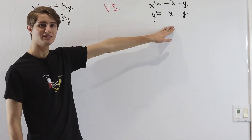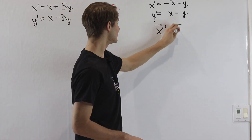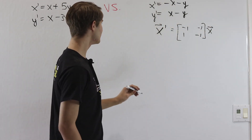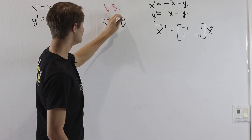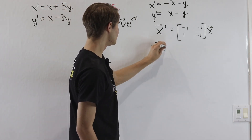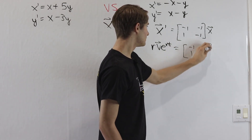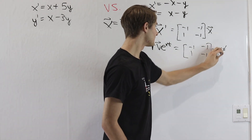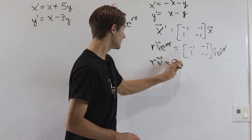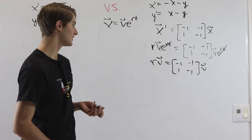Now let's look at the second differential equation. We go through the same process. Our vector equation is x prime equals the matrix negative 1, negative 1, 1, negative 1 times x. We guess x equals v times e to the rt, so differentiating the left side gives rve to the rt equals the matrix times ve to the rt. Canceling e to the rt on both sides gives rv equals the matrix times v — again finding eigenvalues and eigenvectors.